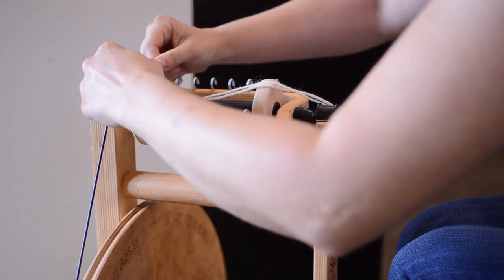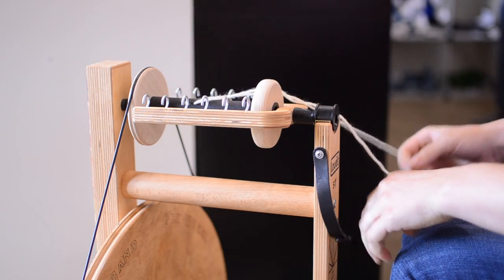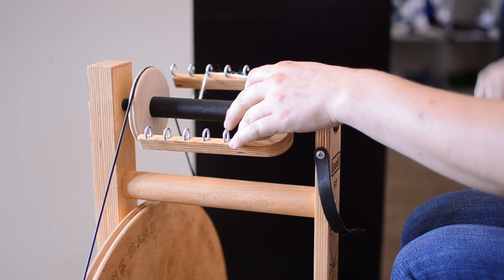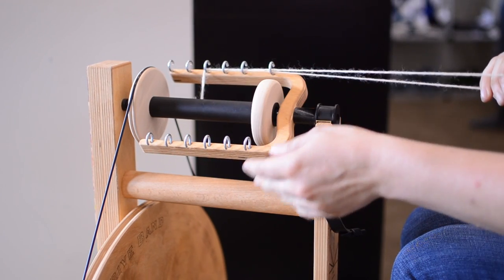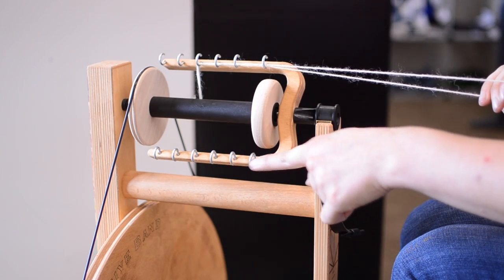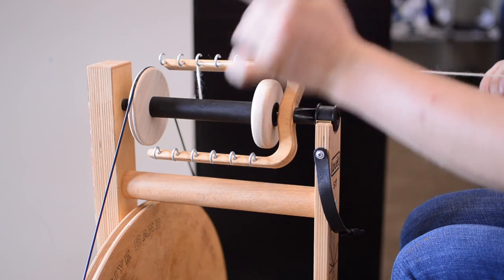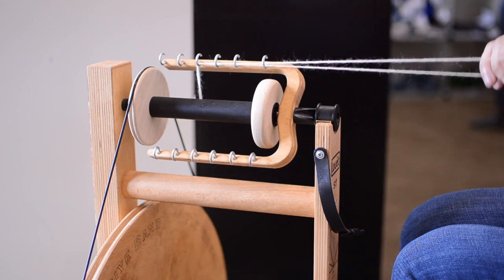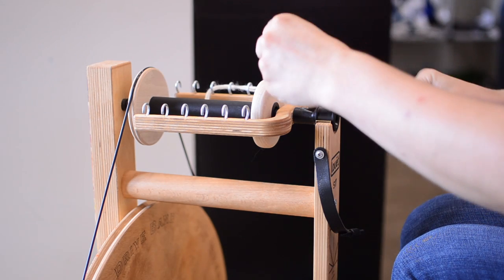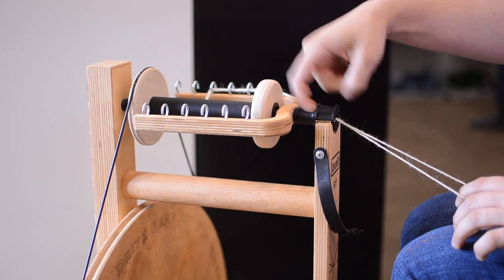So, let's talk a little bit about how the take-up system on this wheel works. I've got my leader attached, I'm going to put it through the hooks on the flyer. A quick note, I love the Louet flyer, because the hooks are offset. So, if you change from side to side, as you're changing hooks, you're going to get a really nice even fill on your bobbin, and it's amazing. Put the leader through the orifice, you don't need a hook, you can just stuff it through with your finger.